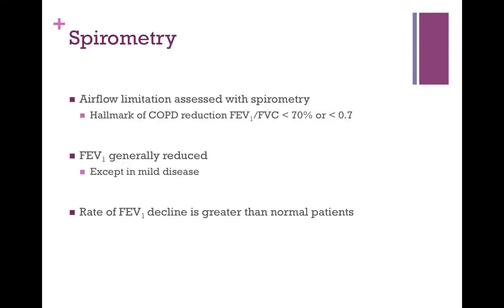As discussed in the spirometry lecture, spirometry plays a very important role in the diagnosis and determination of therapy for COPD. Airflow limitation is assessed with spirometry, and the hallmark finding is an FEV1/FVC ratio less than 70% (or less than 0.7). FEV1 is also generally reduced, though this reduction may not be seen in mild disease, and the rate of decline is greater than that of normal patients.